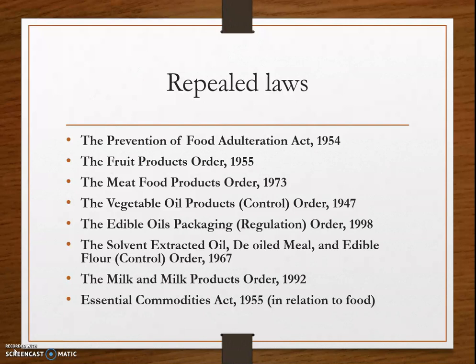The Milk and Milk Products Order 1992 was also among these laws. The Prevention of Food Adulteration Act 1954 was promulgated by Parliament to make provisions for the prevention of adulteration of food. The PFA Act covers food standards, general procedures for sampling, analysis of food, powers of authorized officers, nature of penalties, and other parameters related to food.